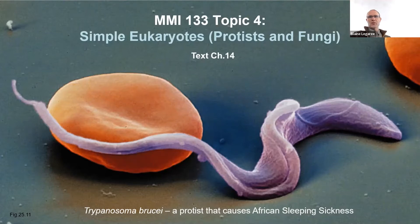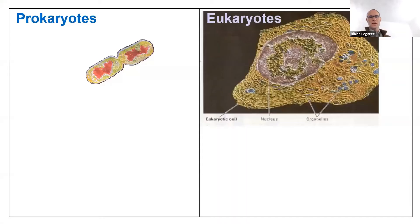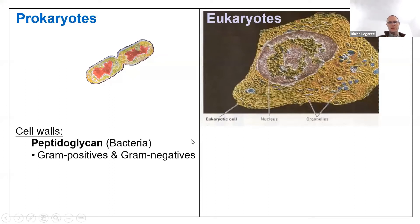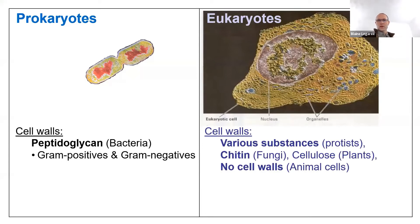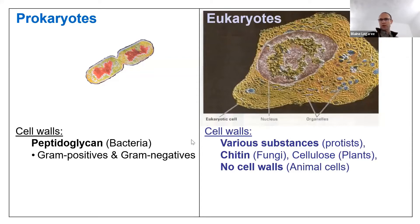We're going to go back to comparing prokaryotes and eukaryotes. Last week we were talking about prokaryotes — the bacteria, they had no nucleus — and today we're going to talk about eukaryotes. A couple of things about those prokaryotes: the bacterial cell wall was made of peptidoglycan and we talked about gram negatives and gram positives. For eukaryotes, if you take a look at the cell wall, there's quite a bit of variety. Animal cells don't have a cell wall. Fungal cells do — they have something called chitin. As for protists, there's actually a huge variety of substances for the cell walls.